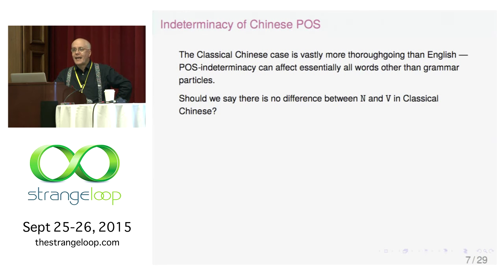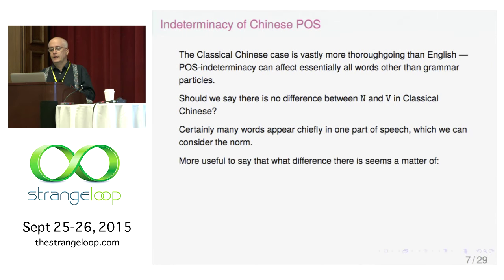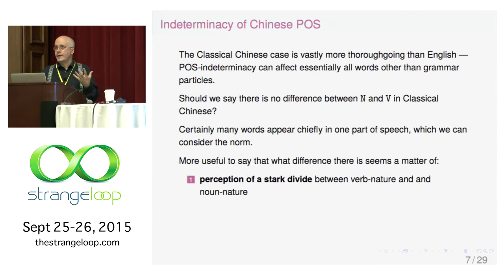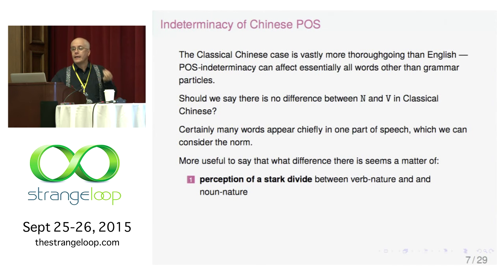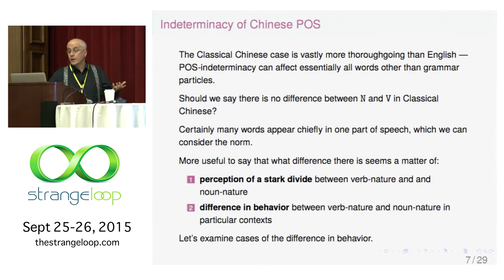In classical Chinese, essentially every word that is not a grammar particle can do this. Should we say there's no difference between nouns and verbs in classical Chinese? I think we shouldn't say that. It's better to keep two points in mind: one, we feel there is a difference between noun quality and verb quality; two, it is behavior in a particular context that determines whether something is a noun or a verb. Let's look at some contexts to make it clear.